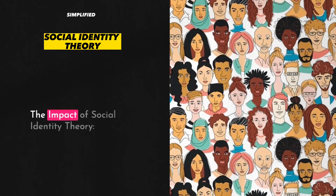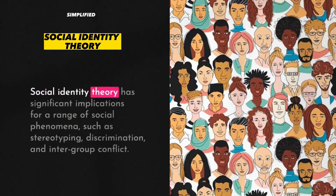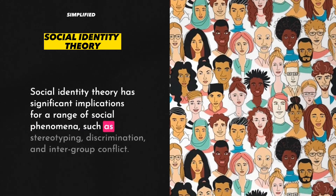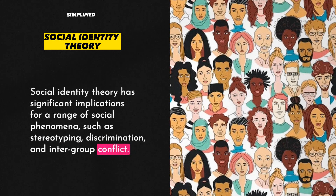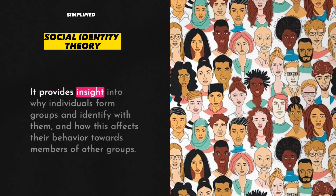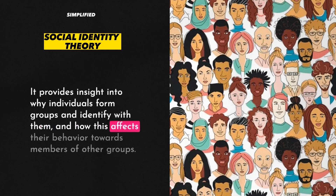6. The Impact of Social Identity Theory. Social Identity Theory has significant implications for a range of social phenomena, such as stereotyping, discrimination, and inter-group conflict. It provides insight into why individuals form groups and identify with them, and how this affects their behavior towards members of other groups.